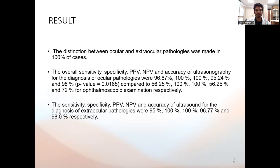The distinction between ocular and extraocular pathologies was made in 100 percent of cases. The overall sensitivity, specificity, positive and negative predictive values and accuracy of ultrasonography for the diagnosis of ocular pathologies were 96 percent, 100 percent, 100 percent, 95 percent and 98 percent respectively, with a statistically significant p-value for extraocular pathology.